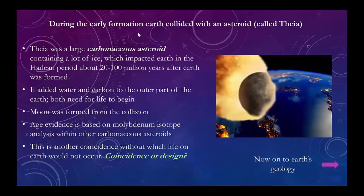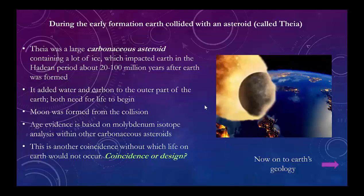The next step is absolutely astounding — a miracle alert. The Earth was formed 4.6 billion years ago, but it was a little short of carbon and water. About 100 million years after it was formed, it got hit by a large asteroid that was one-third the size of the Earth. This asteroid happened to contain carbon and ice as water, and hitting the outer surface gave us all the extra water and carbon we need to have life and oceans. At the same time, the collision knocked off a piece that became our moon. Can this be coincidence? We would not have life if it didn't happen.